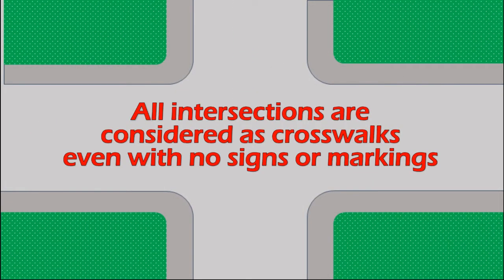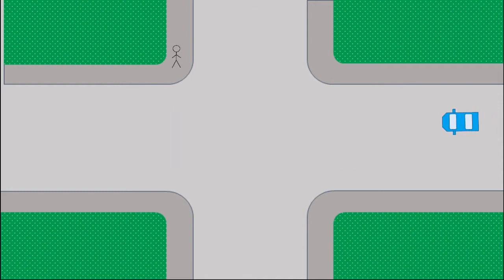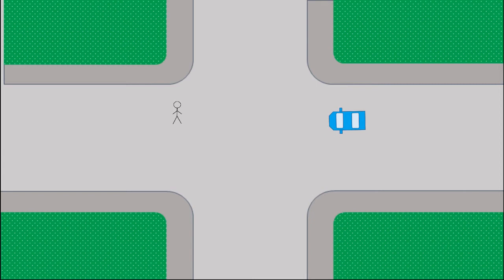The next thing we need to know about intersections is that all intersections are considered as crosswalks whether they are marked or unmarked. Because of this fact, all drivers must yield to pedestrians in crosswalks even though they haven't started crossing. If there is a pedestrian standing at the crosswalk and they appear that they want to cross, drivers must yield to the pedestrian.